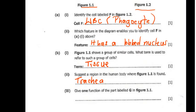And then give one function of the part label G in figure 1.1. So its function is to trap dust particles. If you are moving in a dusty place, the cell is going to trap the dust particles, and later on it's going to push them out together with the mucus through the nostrils so that you don't have a big flu or so that dust particles don't actually enter further into the body. So, it traps dust particles.